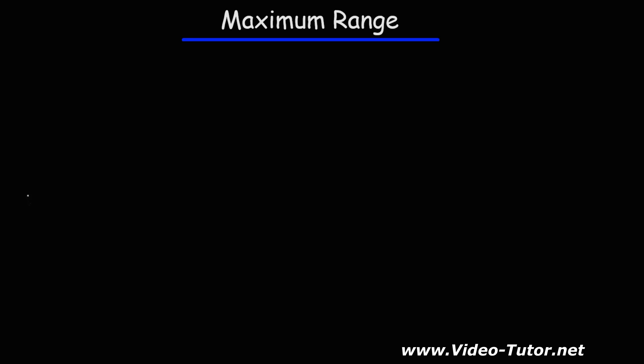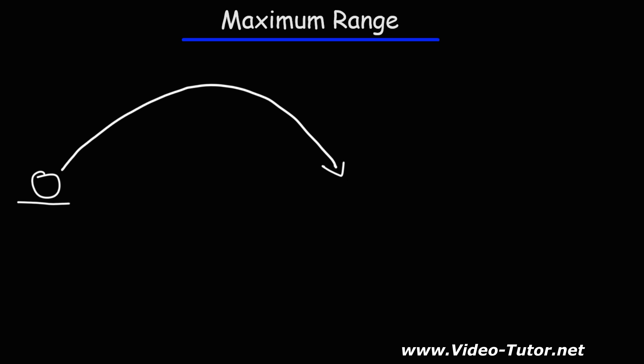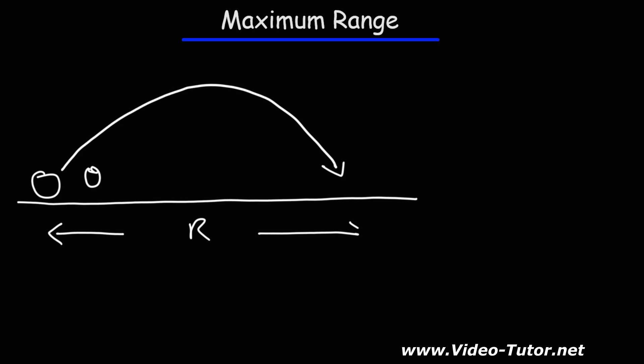Let's say you launch a ball at ground level — it goes up and it goes down, following that trajectory. You launch it at some angle theta. At what angle theta will we get the maximum range that the ball will travel? The range is the horizontal distance the ball is going to travel. How can we determine the angle at which we'll get the maximum range for this projectile motion situation?